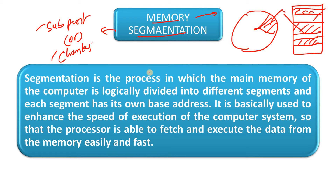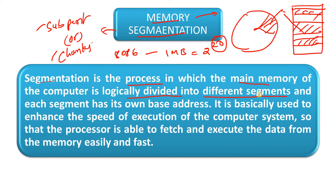An 8086 microprocessor has 1 megabyte of memory, that means 2 power 20 address lines. With the help of 20 address lines we access 1 megabyte of memory. This total memory is divided into different subparts - that is called segmentation. Segmentation is the process in which the main memory is logically divided into different segments, each with its own base address. It is used to enhance the speed of execution so the processor can fetch and execute data easily and fast.